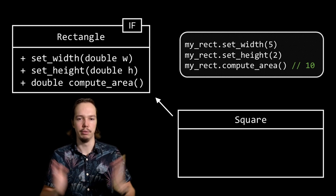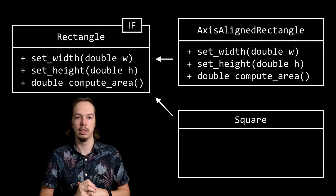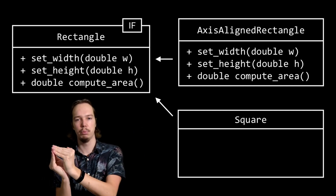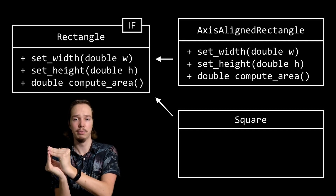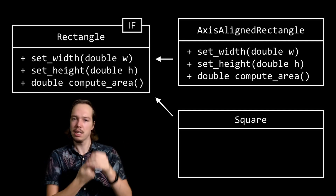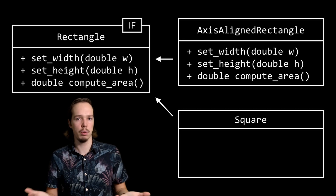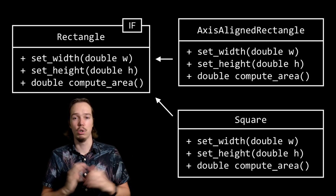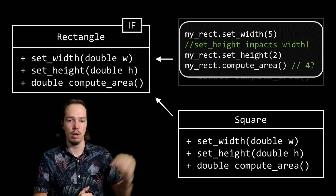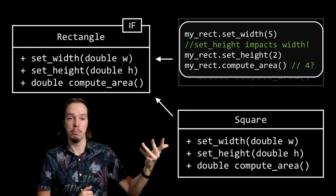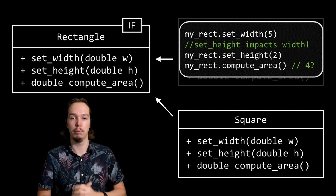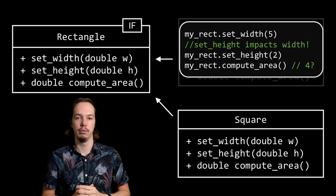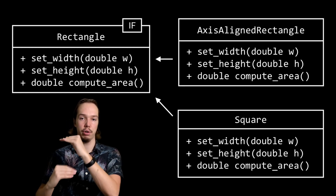If we have an axis-aligned rectangle implementing this rectangle interface, it'll probably be able to set width, set height, and then return 10. But if a developer tries to implement this rectangle interface for a square, they face this annoying problem that if you set any side of the square, you want the other sides to be the same length, otherwise it's no longer a square. So they'll probably make set width also set the height, and have set height also set the width. When our user executes this series of actions, upon setting the height it will again overwrite the width, meaning that the compute area will suddenly result in a different number. In other words, when it comes to the observable behavior through this rectangle interface, we suddenly see different behavior — the square class is not substitutable for other rectangle implementations.